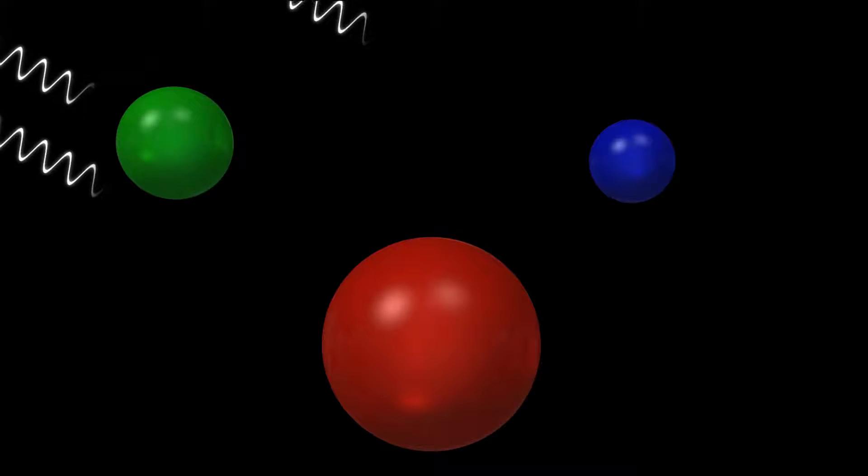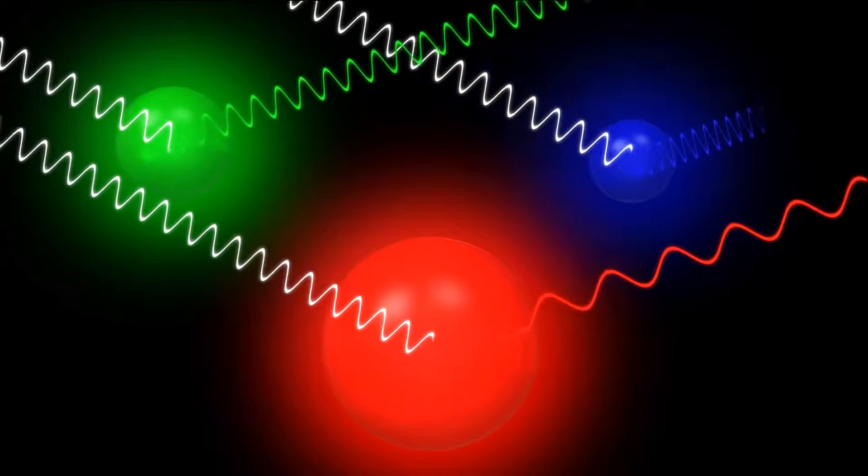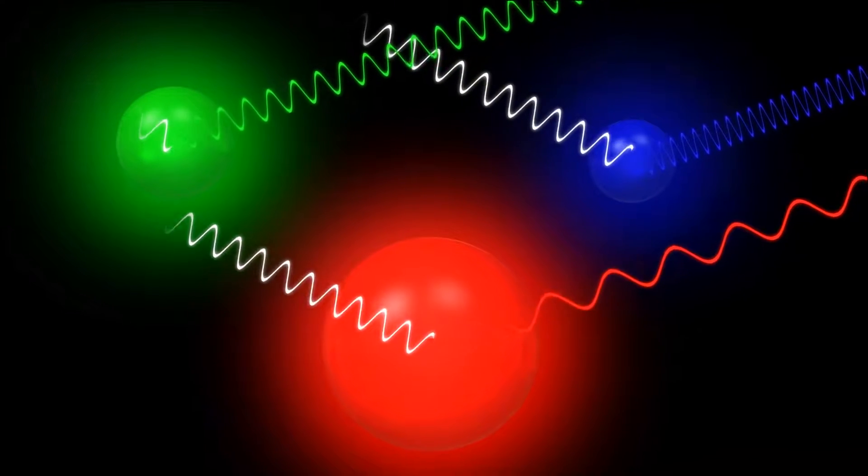When light excites a quantum dot, the larger the size of the dot, the lower the energy waves will be, resulting in a redder light. The smaller it is, the bluer the light will be.